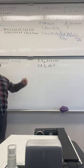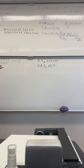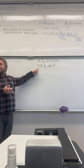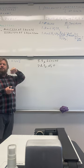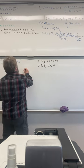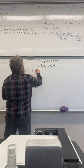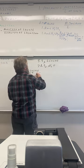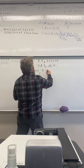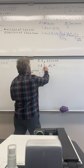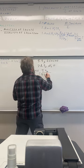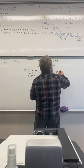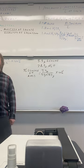We have 5.5 grams of glucose and 78.5 grams of water. The glucose is the solute — it's the lesser quantity. The mass of the solution will be the sum of those two. So to calculate percent glucose by mass: 5.5 grams of glucose divided by (5.5 + 78.5) grams, times 100%.